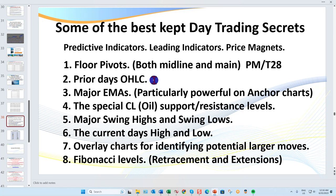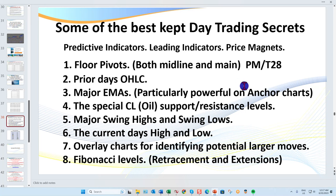Likewise with the prior day's open, high, low, and close. I've been day trading for 27 years — these are the ones you want to learn. The open, high, low, and close act as both support and resistance levels. Pivot magnet trades — the T28 — are a good 85 to 95 percent trade. Then there are major EMAs, where I made three terrible mistakes. Also, major and swing highs and lows, and the current day's high and low.